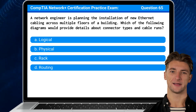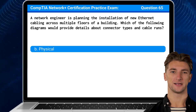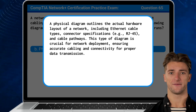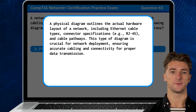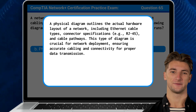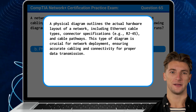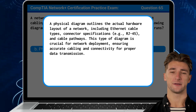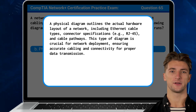The answer is B: Physical. A physical diagram outlines the actual hardware layout of a network, including Ethernet cable types, connector specifications, and cable pathways. This type of diagram is crucial for network deployment, ensuring accurate cabling and connectivity for proper data transmission.